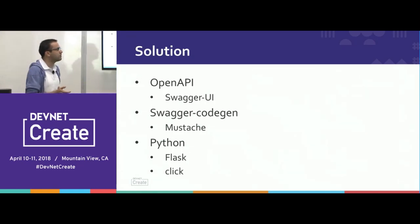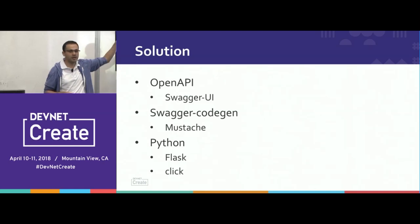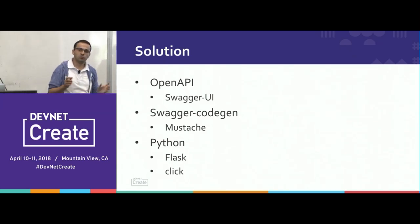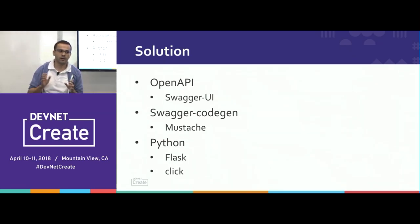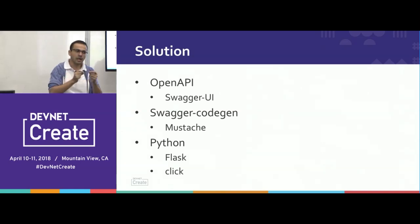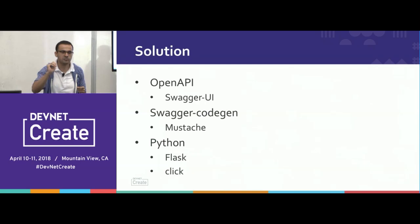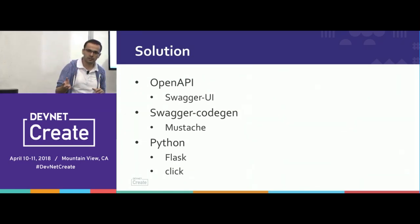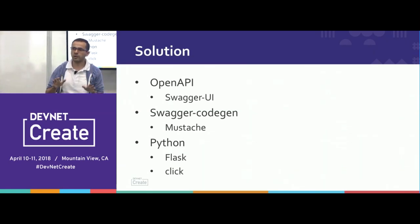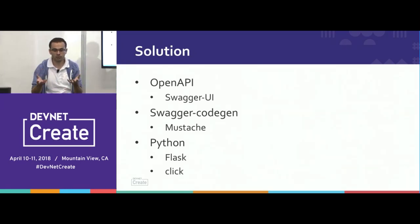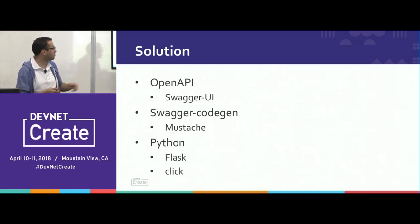The solution I'm providing focuses on these technologies. It's basically using OpenAPI, previously known as Swagger. Within OpenAPI, I'm going to show you Swagger UI — a great tool to do documentation. If you've worked with the Spark API, you'll see that same kind of live documentation where you can click a button and execute an API call right from the docs. Then using Swagger CodeGen, we'll take the specification we have and auto-generate code. Within Swagger CodeGen, we're going to use Mustache — the template specification supporting Swagger CodeGen.